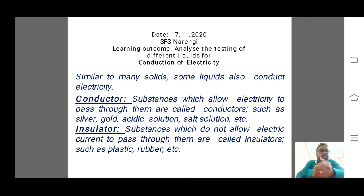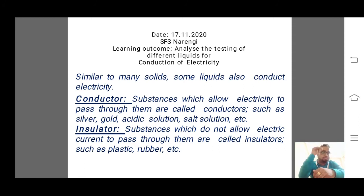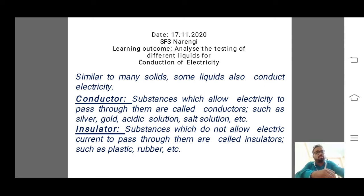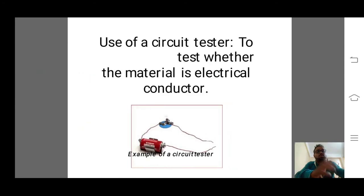Similar to many solids, some liquids also conduct electricity. We have conductors and insulators. Substances which allow electricity to pass through them are called conductors, and substances which do not allow electricity to pass through them are called insulators. Conductors include gold, acidic solution, and salt solution. Insulators include plastic and rubber. These are the things covered in this chapter. Coming to the next topic, we have the use of a circuit tester.